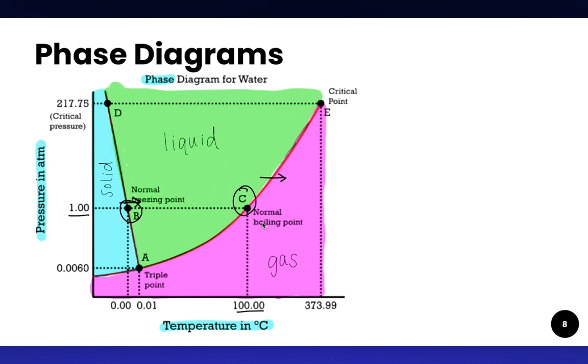Now if you increase the pressure on your sealed container, you will actually not see boiling happen until a higher temperature. If you decrease the pressure, you can see water boil at a much lower temperature. And if you decrease the pressure far enough, you can actually see water go through the phase change of sublimation, where it goes straight from the solid into the gas.